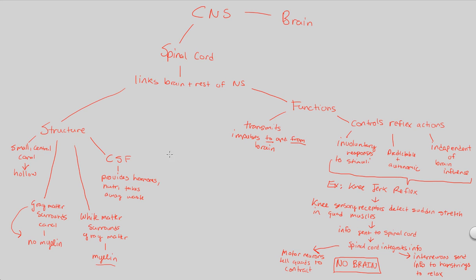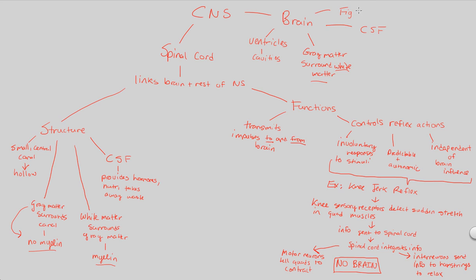That covers our look at the functions and structure of the spinal cord. Briefly, the brain contains ventricles, which are just cavity structures. The brain is also the opposite in gray matter and white matter orientation: here, gray matter surrounds the white matter — the exact opposite of the spinal cord. So the gray matter is on the outside of the brain with no myelin, and the interior white matter contains the myelin. The brain also has access to CSF, cerebrospinal fluid. A brief overview of the brain is shown in figure 49.5, and that covers our look at the central nervous system.